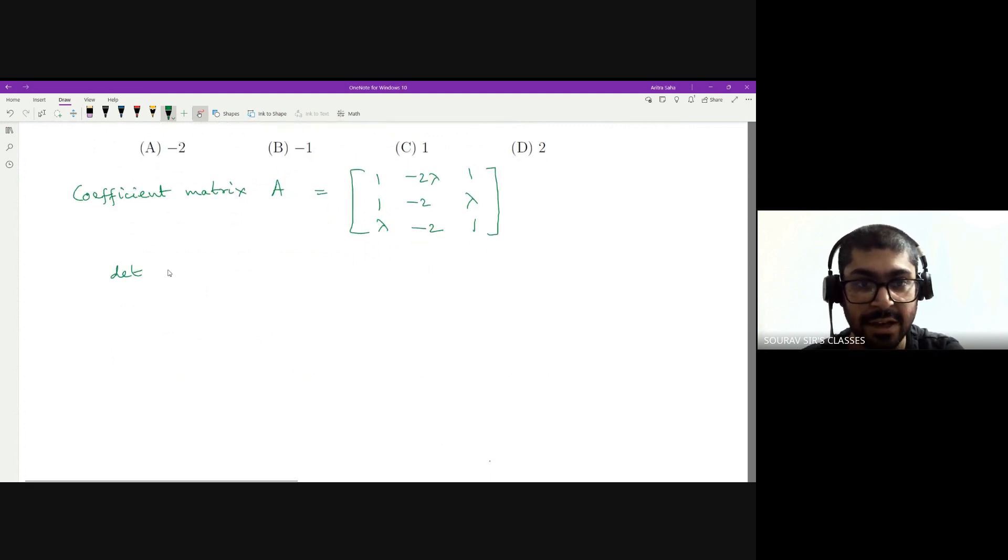So let us check the solutions. It's quite easy. We have to calculate determinant of A equal to zero. This is the equation that we're supposed to make. So determinant A would be, let us keep the matrices intact, and I'll have 1 into determinant of -2, lambda, -2, 1.